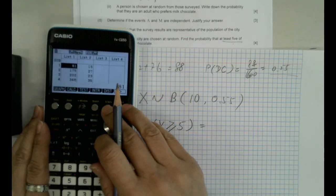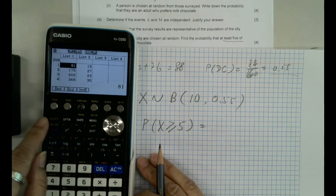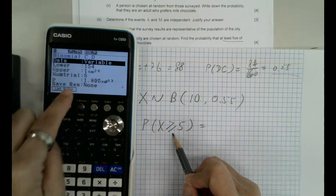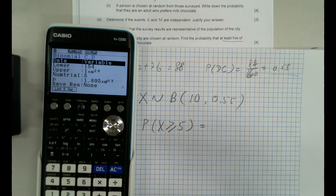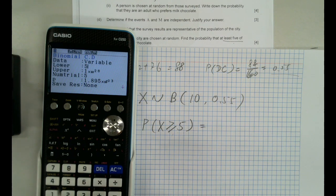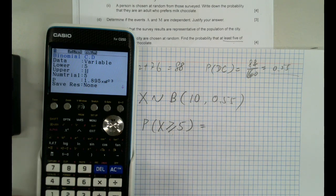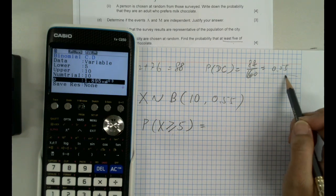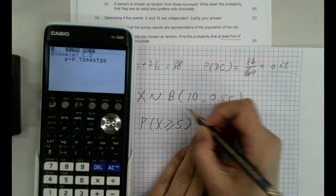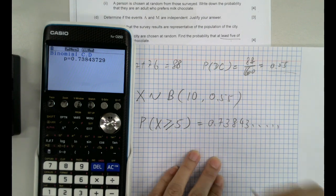Go to manual statistics. Don't worry about those numbers, go to distribution, binomial. Then we have a probability, we have a range there, so it's CD. Make sure the data is variable. Lower we want at least 5, and the upper could be 10 because the maximum we can have is 10. Number of trials is 10 and the probability provided is 0.55. So now that gives us, we got 0.73843, three significant figures.